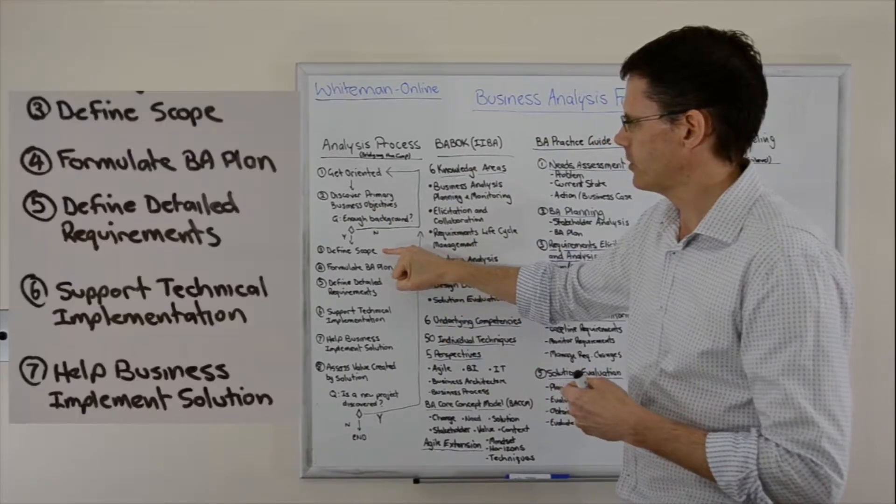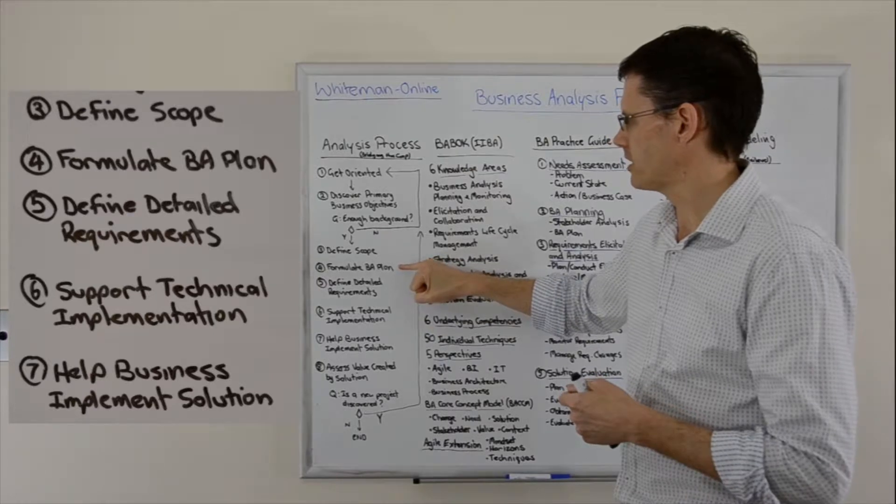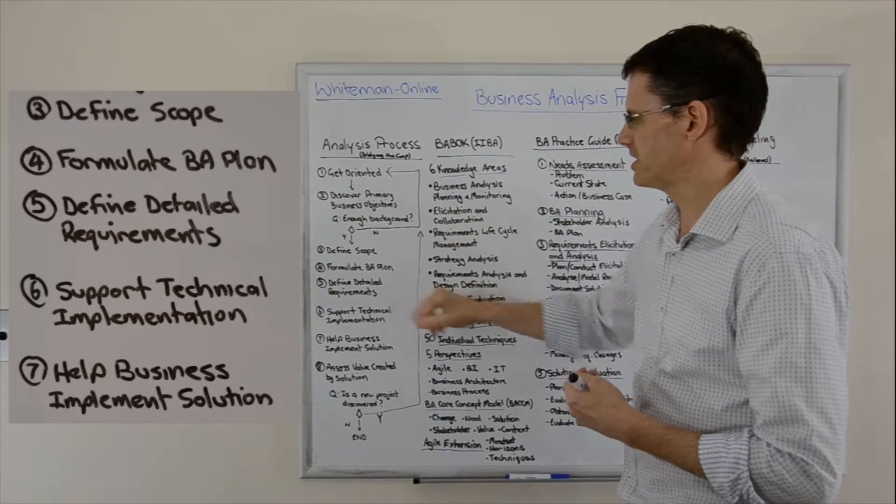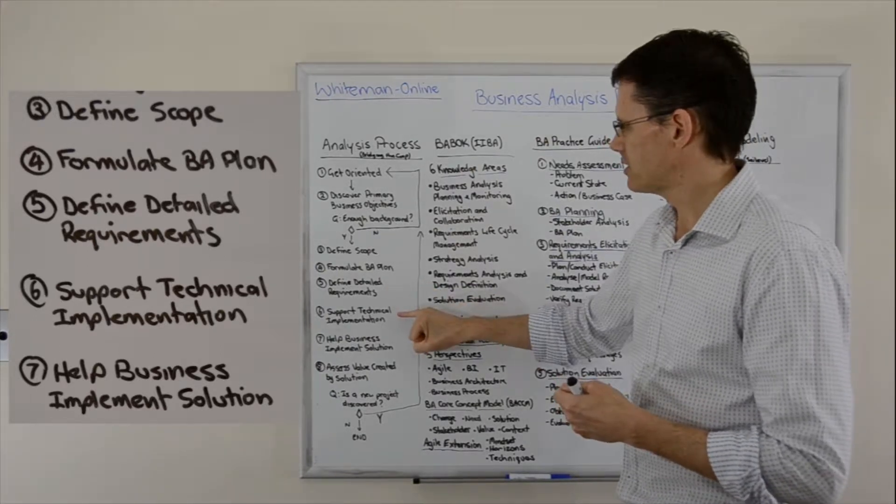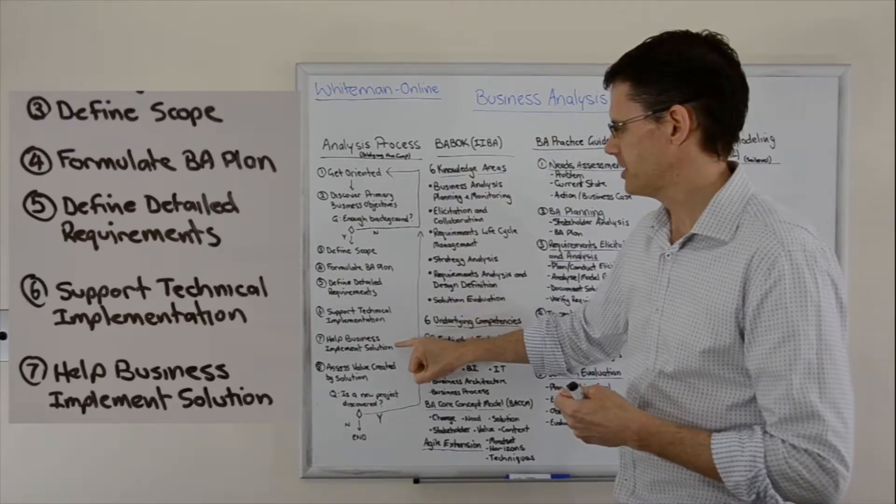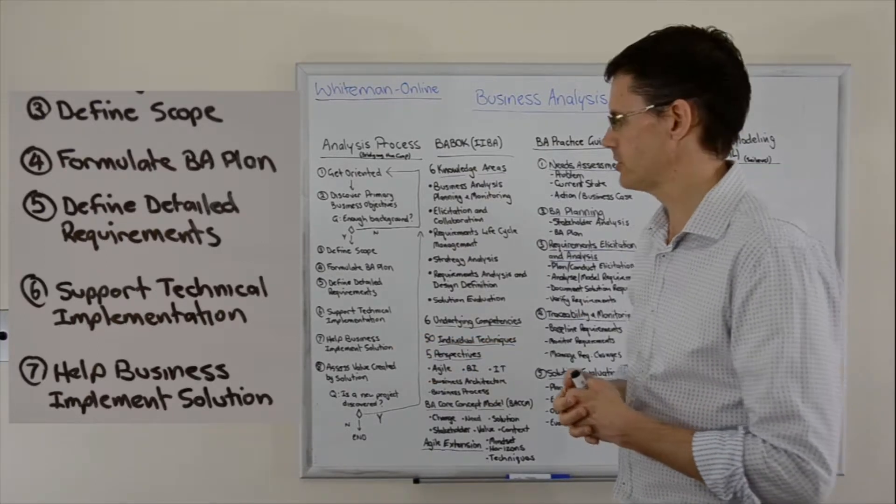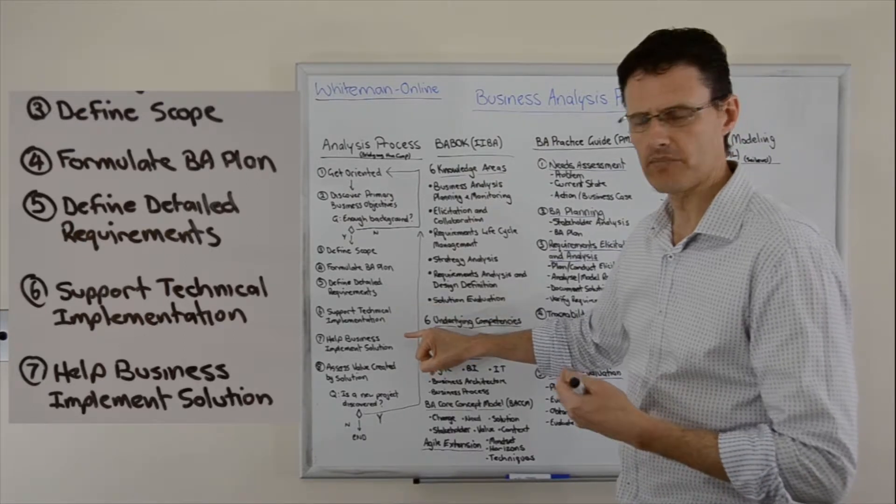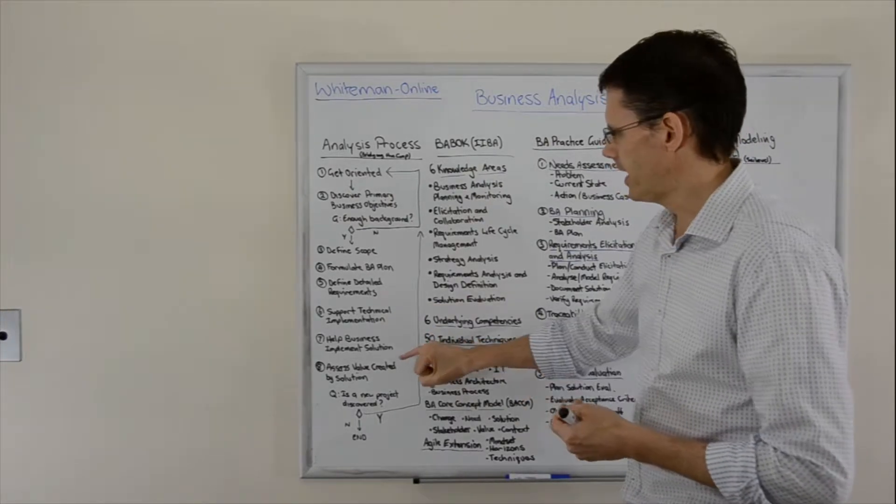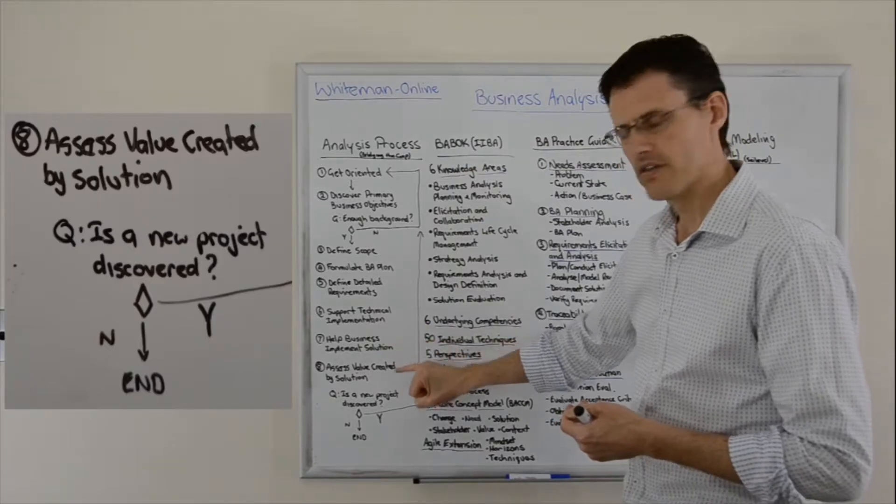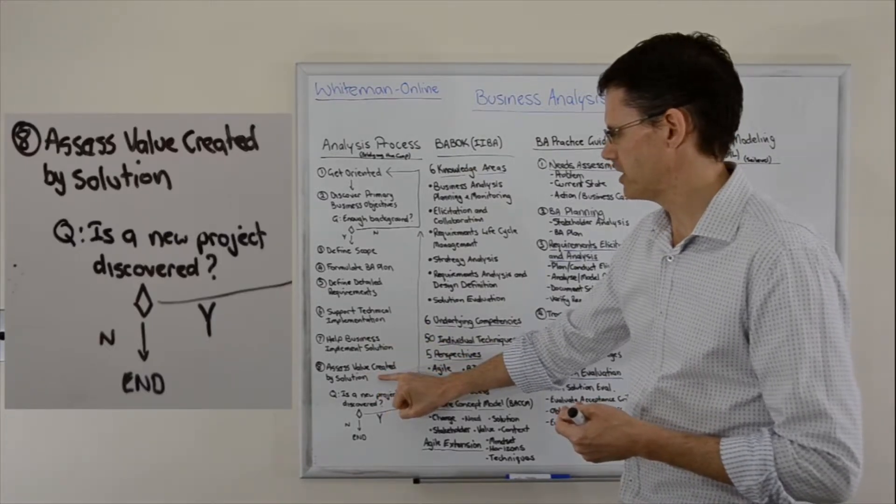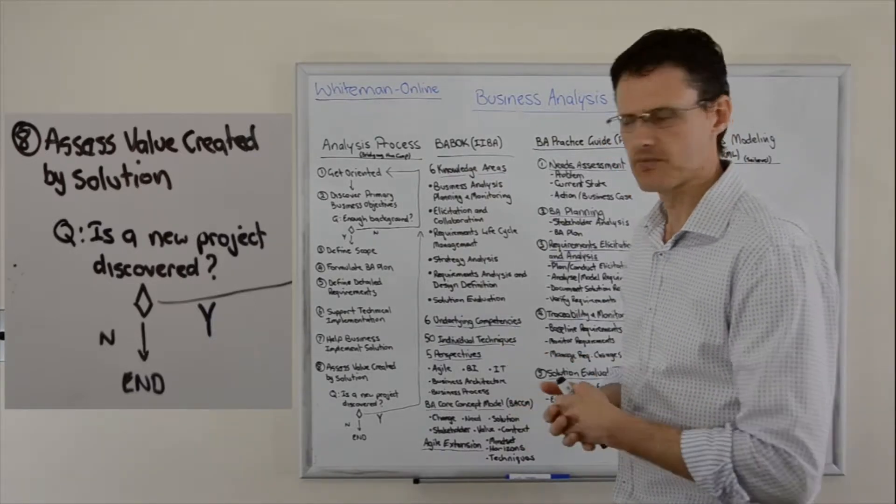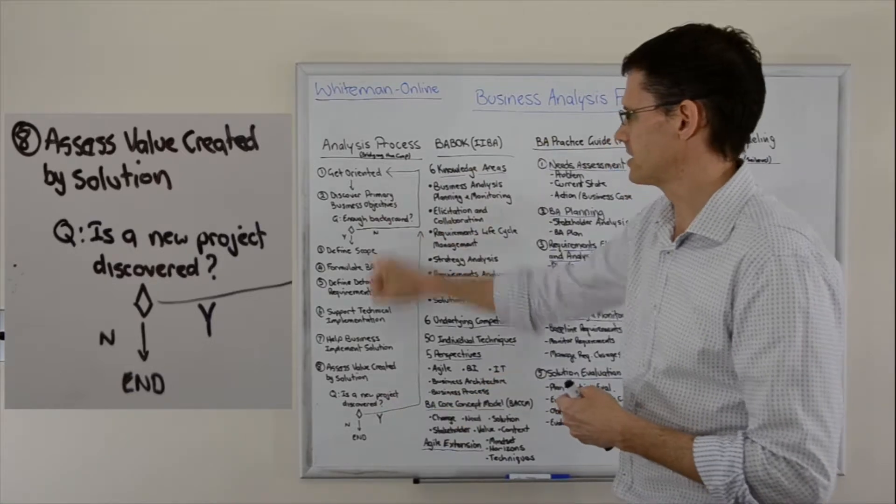They'll then move through defining a scope for the project and formulating a business analysis plan. They'll execute that plan and define detailed requirements. The analyst then supports the technical implementation, helping the business implement the solution. They don't do the technical development or implementation, but they have an assisting role. After it's implemented, they assess the value created by the solution. During projects, you'll discover additional projects, and then the cycle starts again.